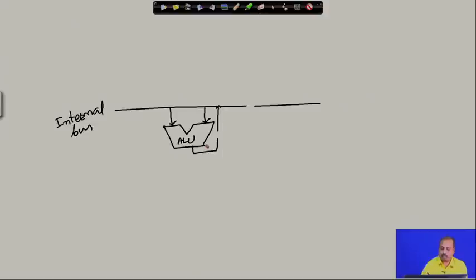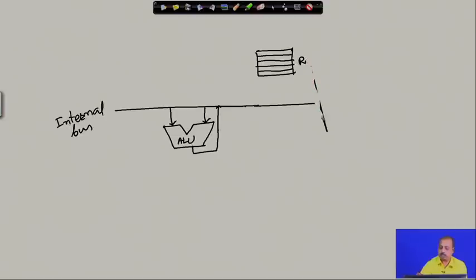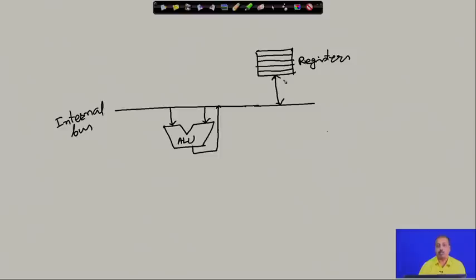Apart from that, there are some more modules. Another important structure is the set of registers. Normally we will have a set of registers — in a processor there are a number of such registers. These are commonly known as CPU registers. These registers are connected to the bus so that the contents of these registers can be made available on the bus, and you can add the content of two registers using the ALU, compare them, or do any operation using the ALU.